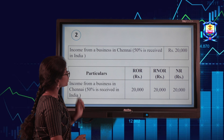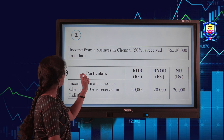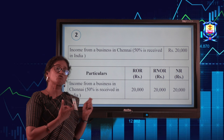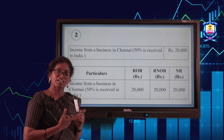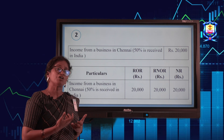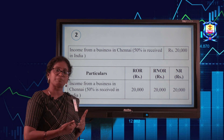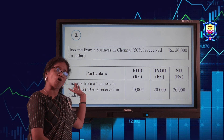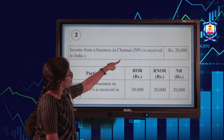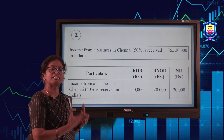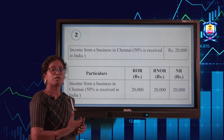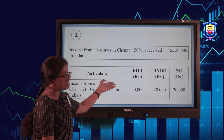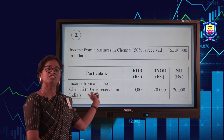Second case: income from business in Chennai, with 50% received in India. Look at the source — the source is from Chennai, which is from India. So this is Indian income. You don't need to check the receipt percentage because the source itself is from India. The entire income is taxable for all three categories. So the entire amount of 20,000 is taxable for ROR, RNOR, and non-resident.